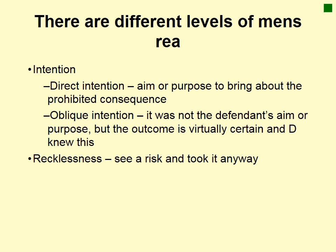There are three different levels of mens rea. First, direct intention — this is where it is the person's aim or purpose to bring about the prohibited consequence; in other words, they got what they wanted. The next level down is oblique intention, sometimes known as indirect intent. Oblique intent is where it's not the defendant's aim or purpose, but the outcome is virtually certain and the defendant knew this. The lowest level is recklessness — this is where the defendant sees a risk and took it anyway.